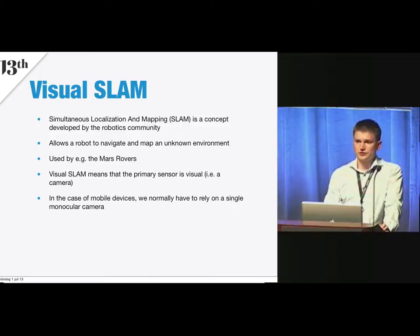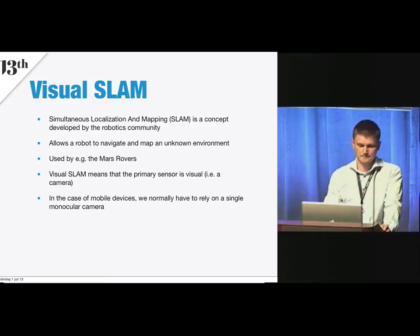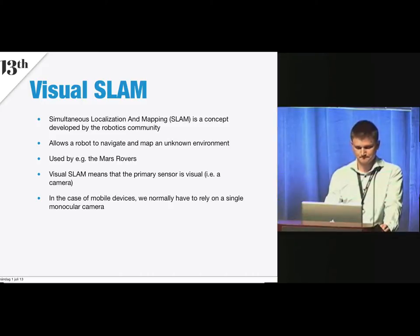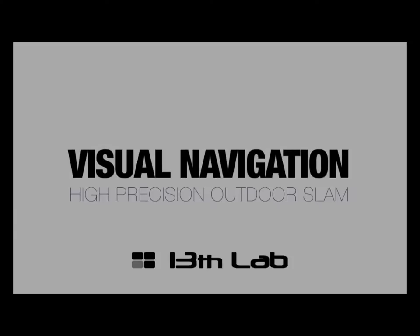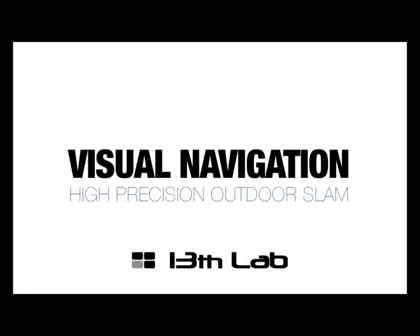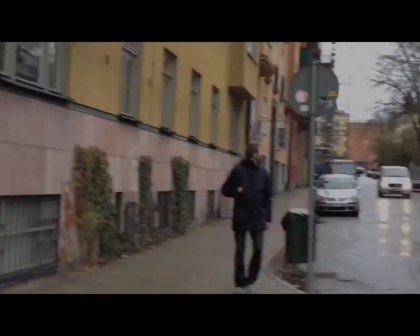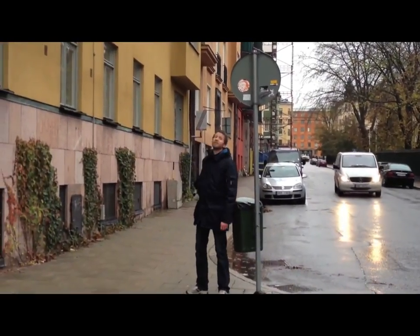So why do you want to use SLAM for AR? Basically, what SLAM does is turn the camera into a positioning sensor. It solves the fundamental problem of positioning the device versus the structure of the environment. It allows creation of sparse 3D maps, tracking of a device outside of a known environment, and it also handles changing environments.